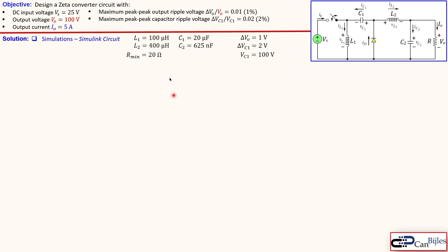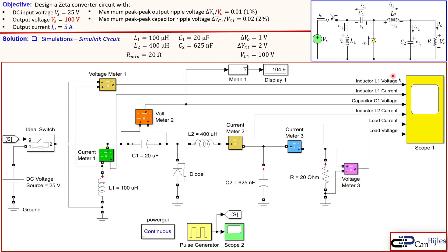Let's collect the values we just calculated and look at the circuit in the simulator. This is the Simulink circuit — you see here the ideal switch, the input voltage, the capacitor, the inductor, the diode, and the resistor, along with some measurements. We see also the average capacitor value of C1 is approximately 105 volts, but we calculated 100, so there's a slight error here which we will address shortly.